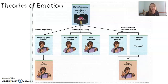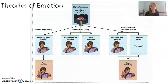This next segment is about emotion. The unit is motivation, emotion, stress, and personality — a really big unit broken down into three smaller units. At the end of this video, you should be able to explain emotions through the different theories of emotion. The biggest part is being able to explain how each different set of psychologists explains what emotion is. Emotion sounds simple, but when we start breaking it down, it is more complex.